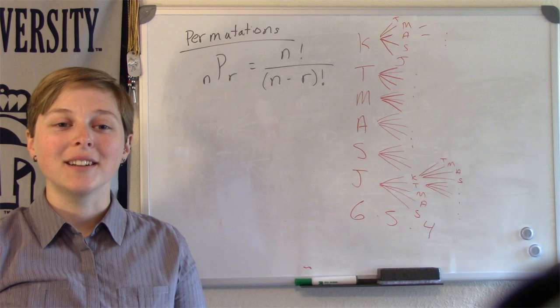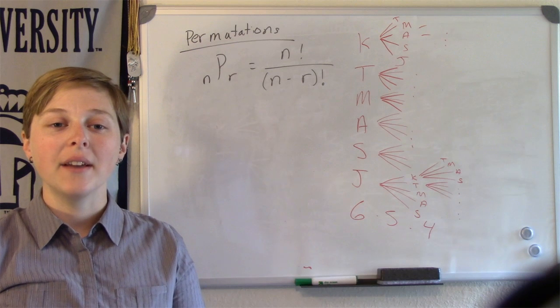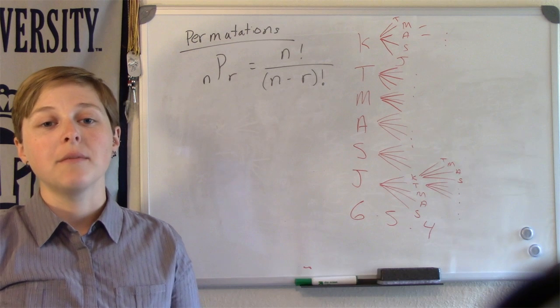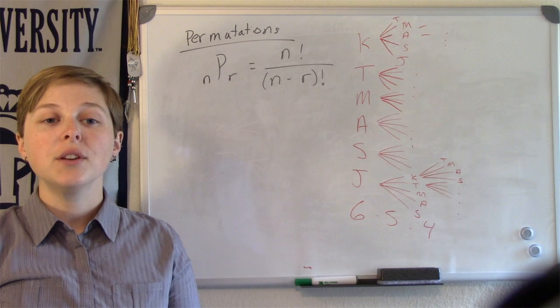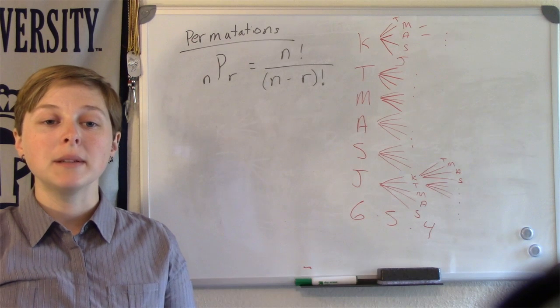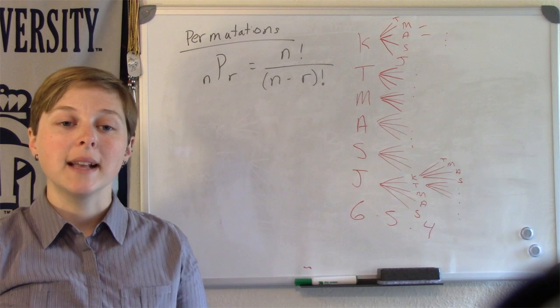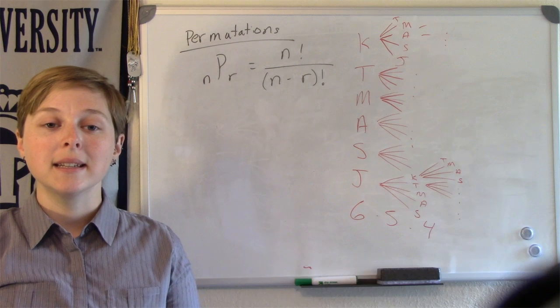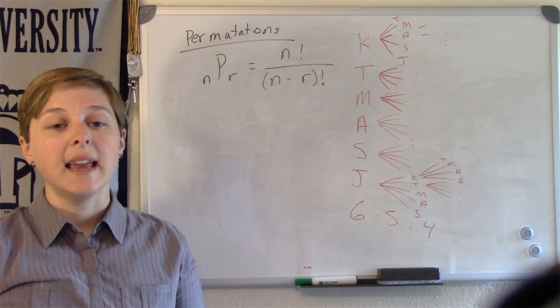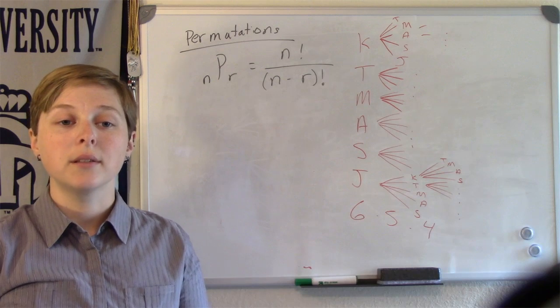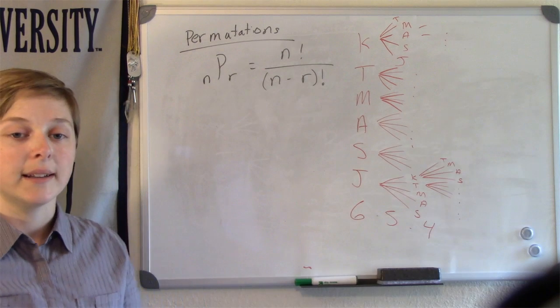Therefore, notice that there are six times five times four different possibilities. If we were to use the permutation formula where we selected N equals six distinct objects taken R equals three at a time, we would get the following.